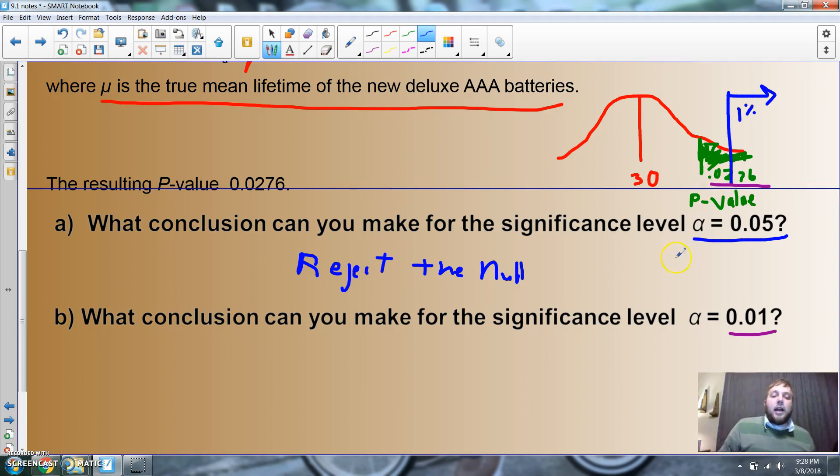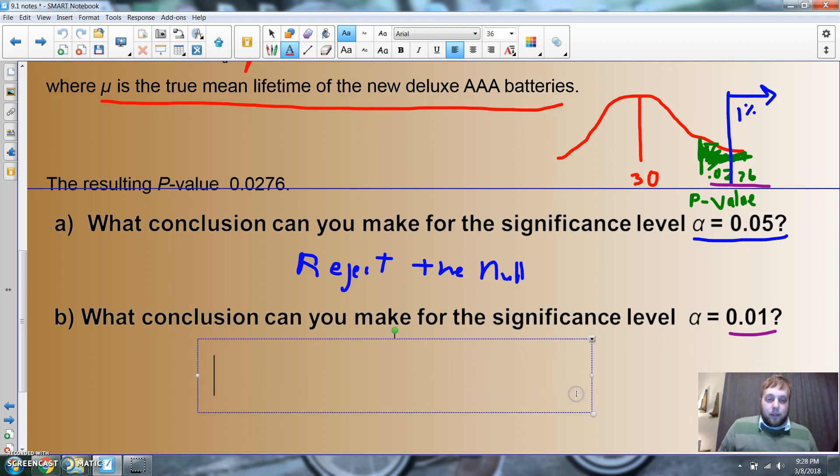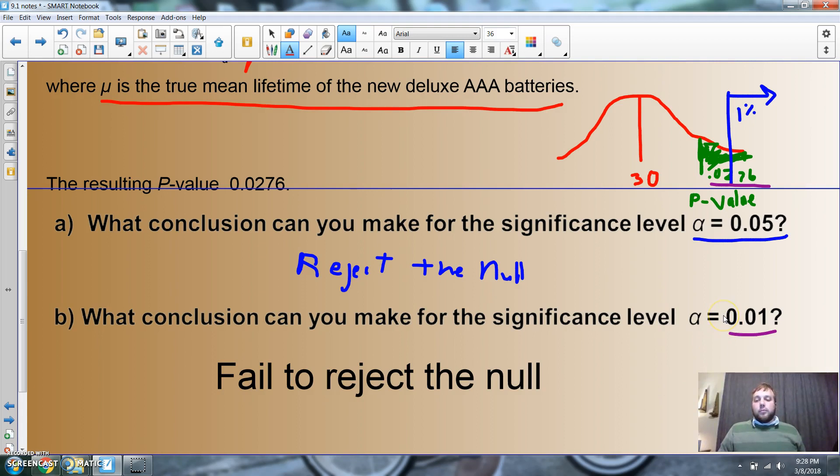Remember, if my p-value which is at two percent is higher than the significance value, if the p-value is high the null will fly. So we're going to fail to reject the null.